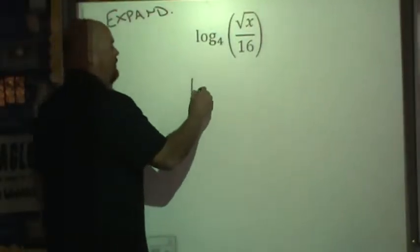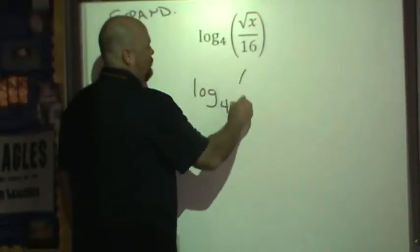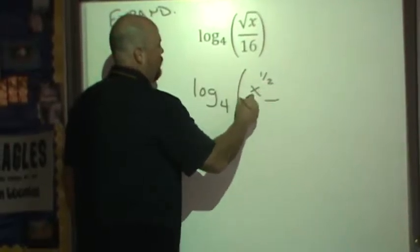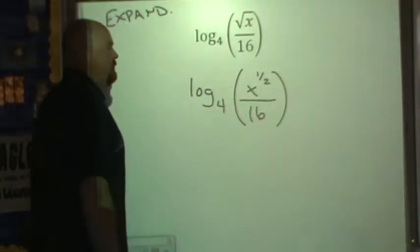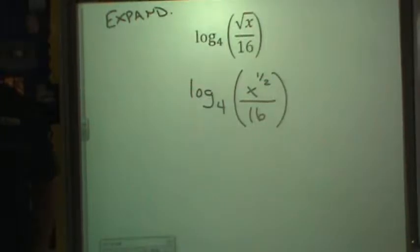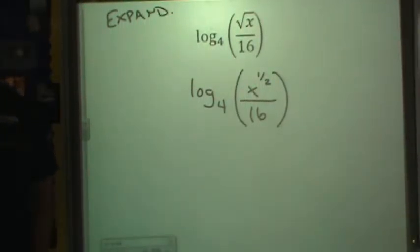So before I even start this, I'm going to rewrite this as x to the 1 half power over 16. Is everybody okay with that? There's another way to look at this, so I think I'll hold on to that for now.